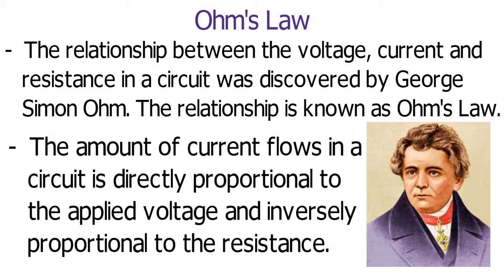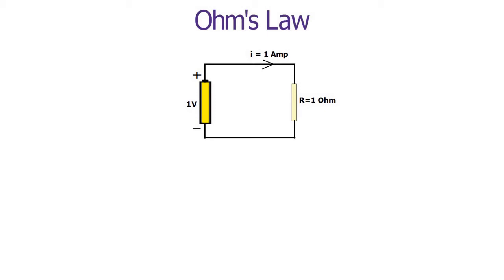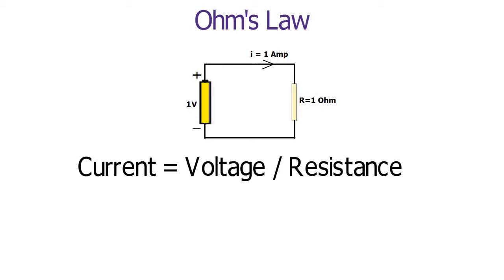From Ohm's law, three different equations are obtained. Current equals voltage divided by resistance. 1 ampere is the current through a 1 ohm resistance that has 1 volt of potential difference applied across it.